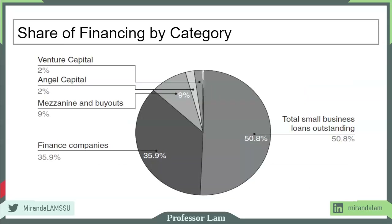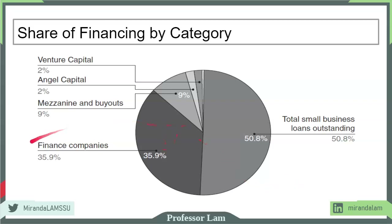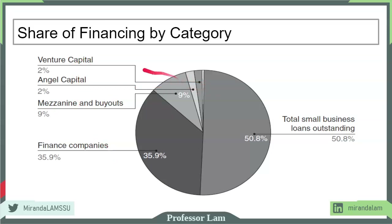Here is an overview of different types of financing that businesses utilize. As you can see, more than 50% of business financing comes from loans. Traditional borrowing from banks is a very large part of business financing. Finance companies — which are not banks but are usually some kind of loan or loan hybrid — are also significant. Venture capital and angel capital represent a relatively small percentage of financing.